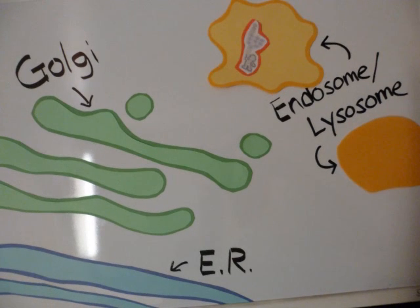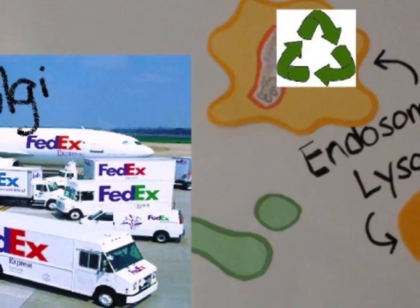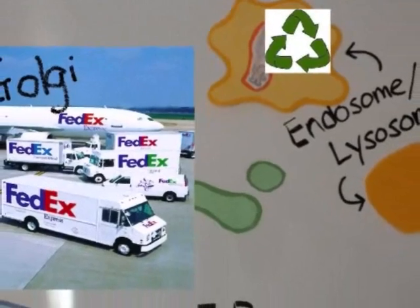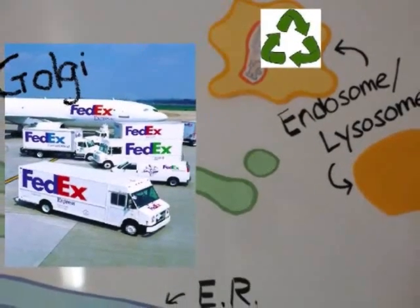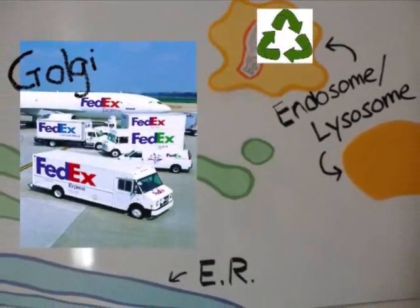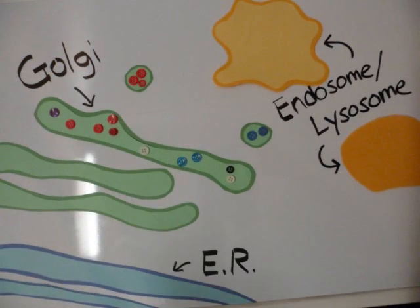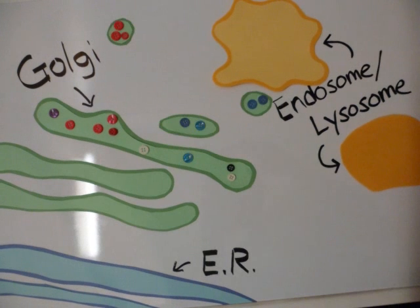The Golgi apparatus is analogous to the FedEx of the cell, where proteins receive post-translational modifications and are sorted for targeting to their proper destination.